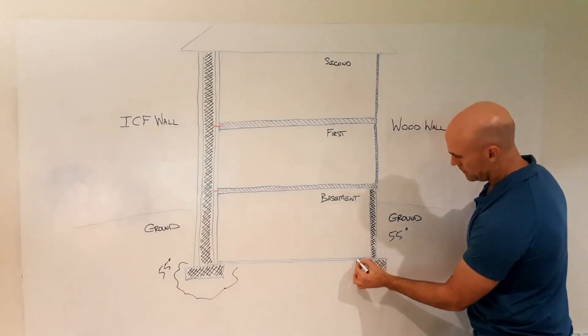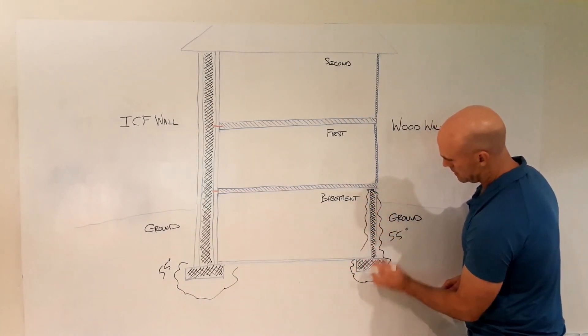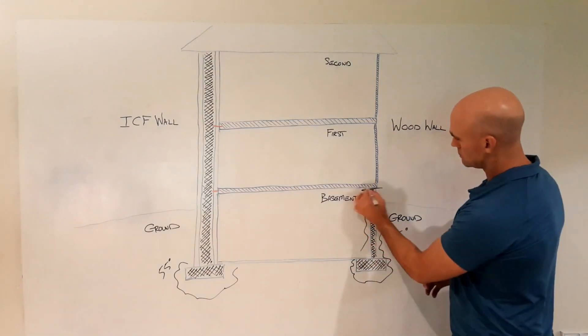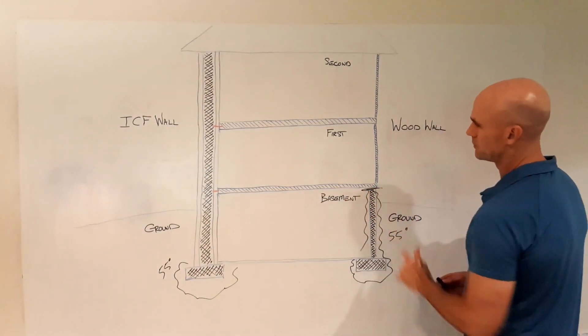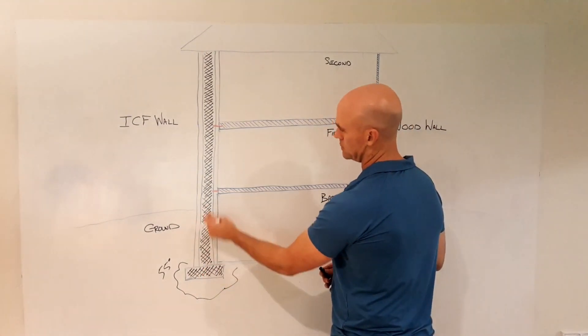Where in a conventional house, the 55 degree footer and foundation wall, it goes to this point right here, and that steady free energy from the earth ends right at this junction between the concrete and the wood frame. Where in the concrete house, that energy radiates all the way up to the top.